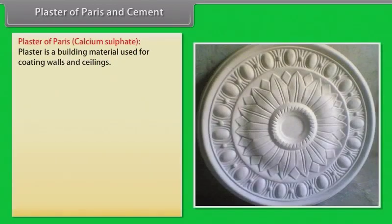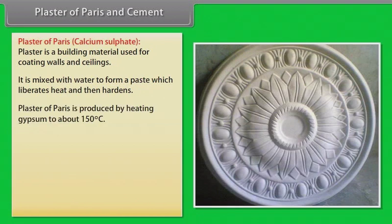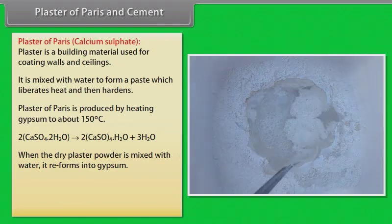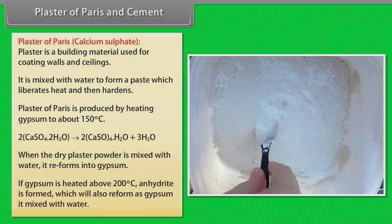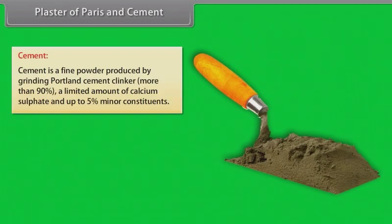Plaster of Paris and cement. Plaster of Paris, calcium sulphate, is a building material used for coating walls and ceilings. It is mixed with water to form a paste which liberates heat and then hardens. Plaster of Paris is produced by heating gypsum to about 150°C. When dry plaster powder is mixed with water, it reforms into gypsum. If gypsum is heated above 200°C, anhydrite is formed, which will also reform as gypsum when mixed with water.